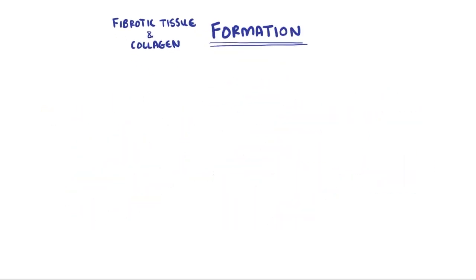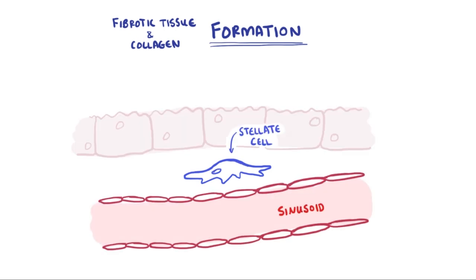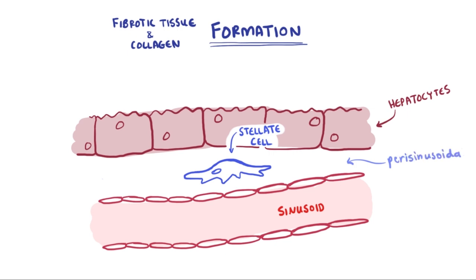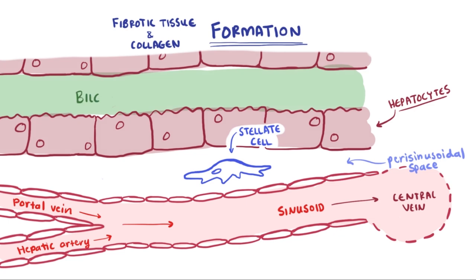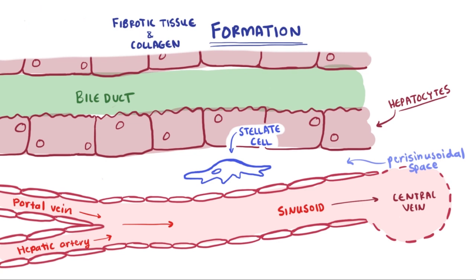But how do these bands of fibrotic tissue form? Fibrosis is a process mediated by special cells called stellate cells that sit between the sinusoid and hepatocyte, known as the parasinusoidal space. Here's a basic layout of the functional unit of the liver: the portal vein and hepatic artery combine into a sinusoid, which goes into the central vein, lined with hepatocytes. Along these you've also got a bile duct, and all three constitute a portal triad. The parasinusoidal space — literally meaning around the sinusoidal space — is where stellate cells are located.